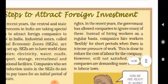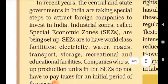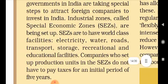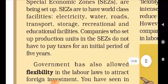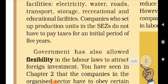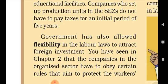Now let us look at the steps to attract foreign investment. What steps should be taken to attract foreign investment in the country? In recent years, the central and state governments in India are taking special steps to attract foreign companies to invest in India. Industrial zones, called Special Economic Zones, are being set up. These are to have world-class facilities — electricity, water, roads, transport, storage, recreational and educational facilities. Companies who set up production units in these zones do not have to pay taxes for an initial period of five years.